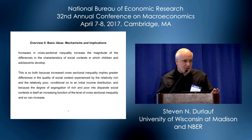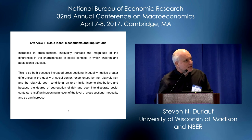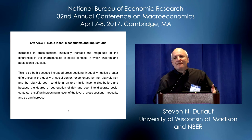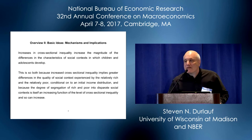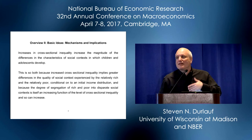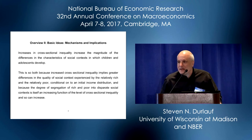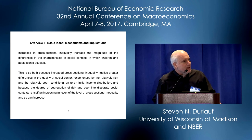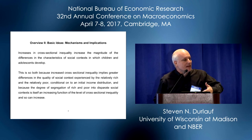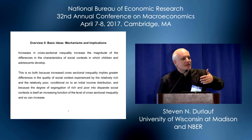You increase cross-sectional inequality, the consequence is increased segregation, and once you have increased segregation, one has increased disparities in the factors — the influences on affluent children versus less affluent children. Once you put those together, you have a slowdown of conventional measures of mobility. By implication, the Gatsby curve emerges as an equilibrium from this mechanism in which inequality begets segregation, and segregation begets immobility.